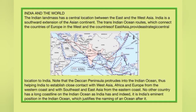India and the World: the Indian landmass has a central location between East and West Asia. India is the southward extension of the Asian continent. The trans-Indian Ocean routes, which connect the countries of Europe in the west with the countries of East Asia, provide a strategic central location to India — helping it connect with both west and east easily.